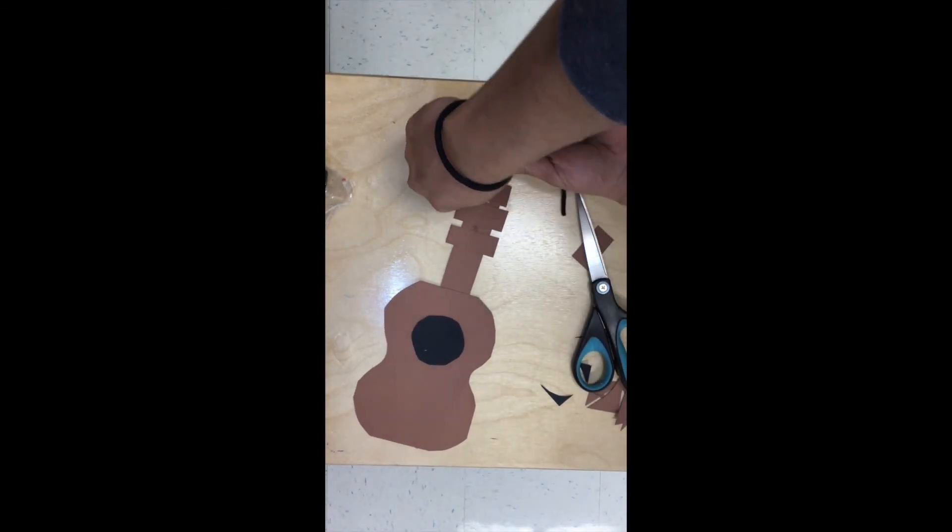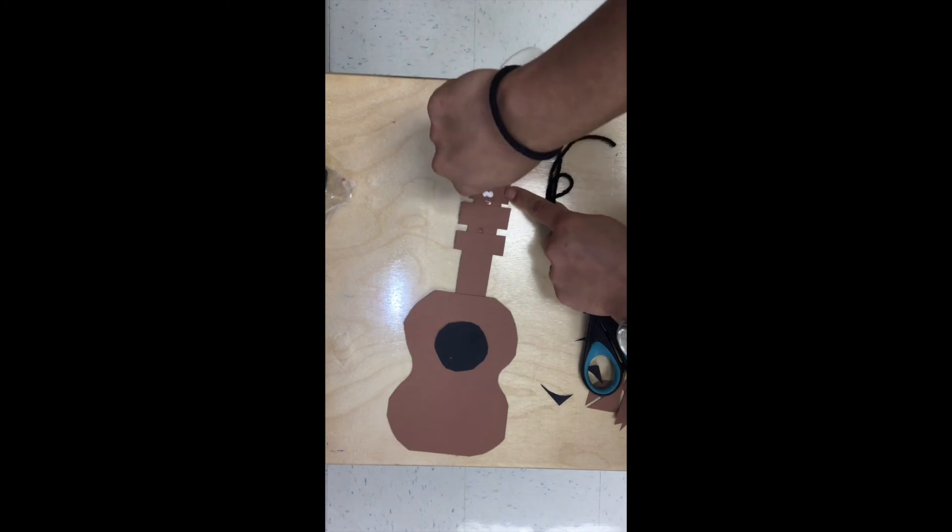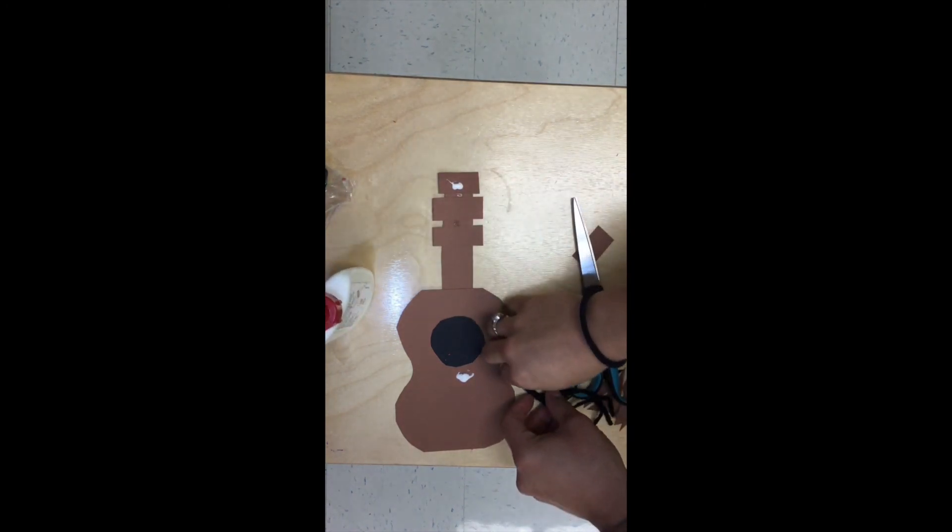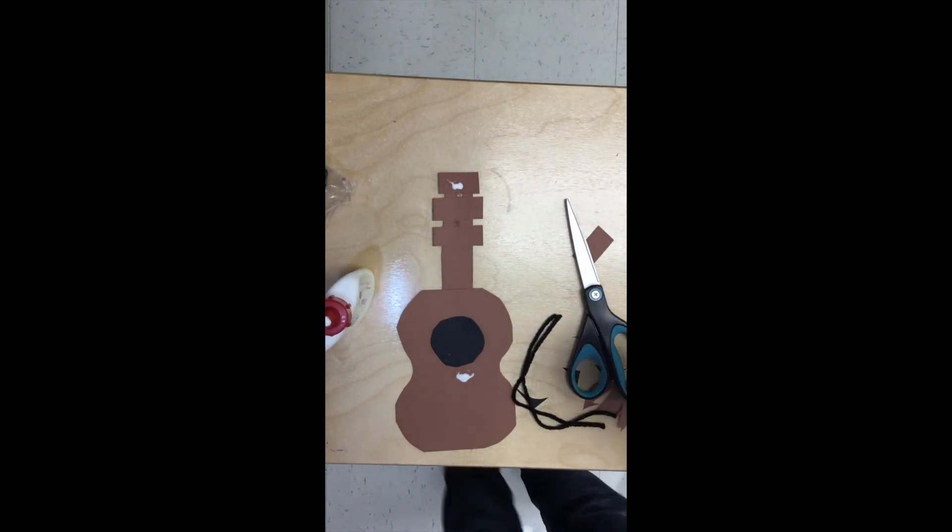Now you will need a good dot of glue up at the top and a good dot of glue down at the bottom. Remember, the strings go across the sound hole.